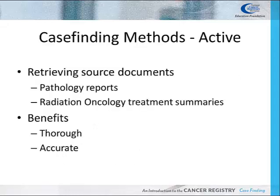There are two methods of case finding used by registries: active and passive. Active case finding involves registry personnel retrieving and reviewing source documents such as pathology reports or radiation oncology treatment summaries. The benefit of active case finding is that it is more thorough and accurate of the two methods, since registry personnel have knowledge of criteria and terminology to recognize reportable cases.